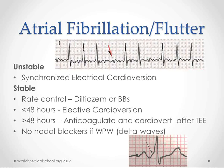AFib and atrial flutter — you can see there are no discernible P waves and the T waves are generally distorted. For unstable patients, immediately perform synchronized electrical cardioversion. In stable patients, rate control using diltiazem or beta blockers. If onset is under 48 hours, you can cardiovert. If over 48 hours or uncertain, anticoagulate first to prevent emboli to the brain, then cardiovert after a transesophageal echo to ensure no thrombus is present.